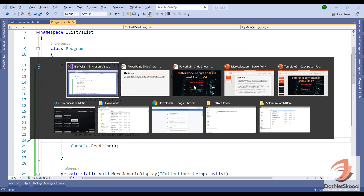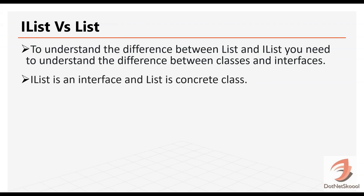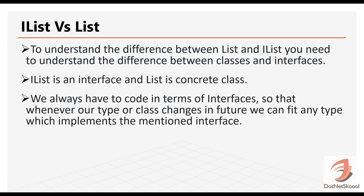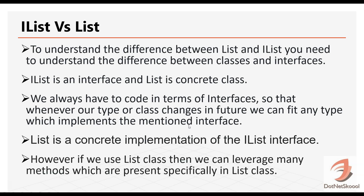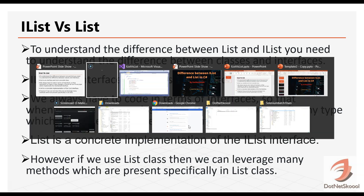Back to our slides: IList is an interface and List is a concrete class. We should always code in terms of interfaces so that whenever our type or classes change in the future, we can fit any type which implements the mentioned interface. That's what we saw - our method accepting IList and ICollection was able to take the List type easily. List is a concrete implementation of the IList interface. The last important point: if we use the List class, we can leverage many methods which are present specifically in List.